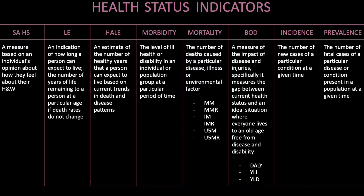Morbidity is the level of ill health or disability in an individual or population group at a particular period of time. Mortality is the number of deaths caused by a particular disease, illness or environmental factor. Maternal mortality is the number of deaths of women whilst pregnant or within 42 days of termination of pregnancy due to or aggravated by childbirth. The maternal mortality rate is the number of deaths per 100,000 live births.